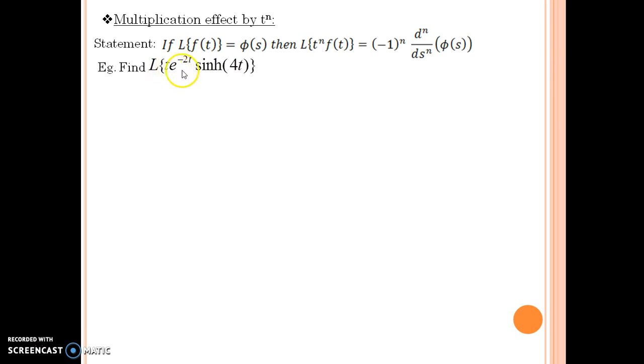Let us see an example. We are going to find Laplace of t·e^(-2t)·sinh(4t). I would like to advise you that whenever a function is given, you try to either simplify the function if possible, or you start with the rightmost function available. In this we are going to start with sinh(4t).